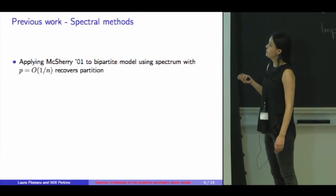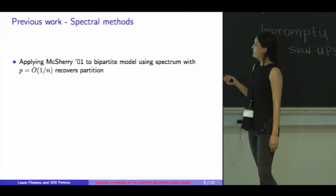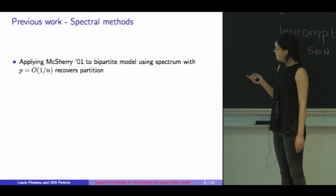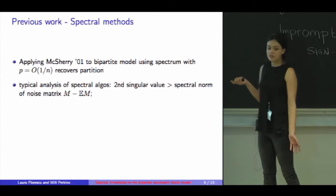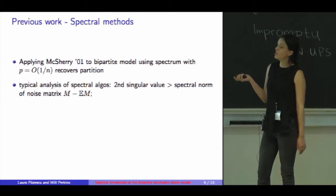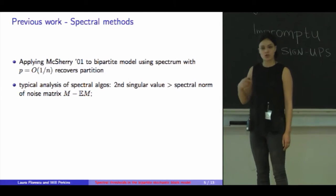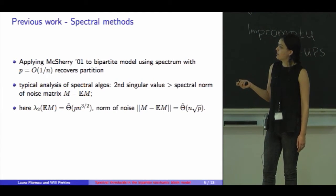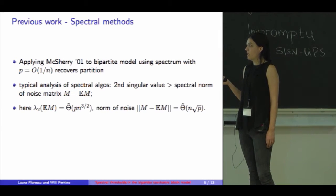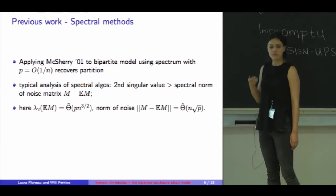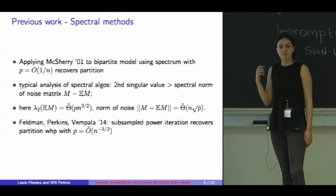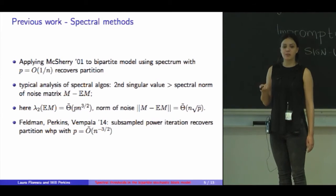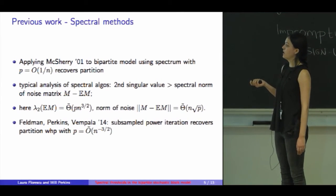Just to give you a brief idea of the spectral methods that have been applied to recover the partition, a very standard result, McSherry recovers the partition when the edge density is O of 1 over N. But a typical analysis of spectral algorithms is that the second singular value of the adjacency matrix must be much larger than the spectral norm of the noise matrix. For this model, the second largest singular value is P times N to the 3 halves, and the norm of the noise matrix is N root P. So for the parameters that I want, the spectral method should not work. Feldman, Perkins, and Vempala have shown that subsample power iteration will recover the partition in this model with high probability when the edge density is N to the minus 3 halves.